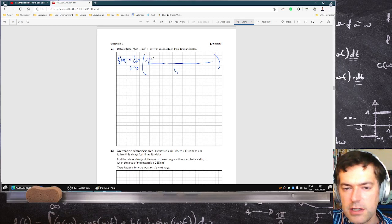So that's two x plus h squared plus four x plus h minus f of x minus two x squared minus four x.